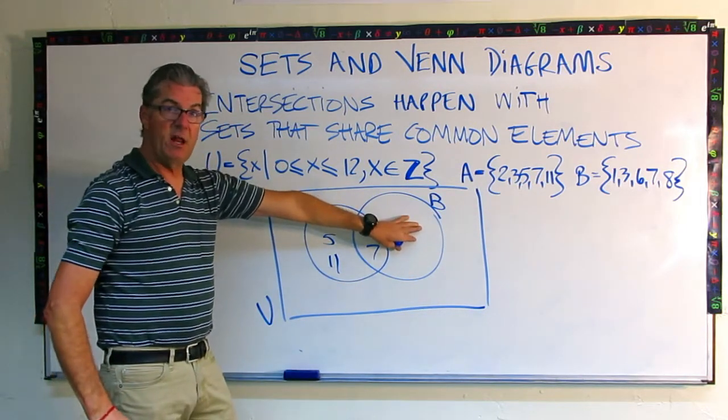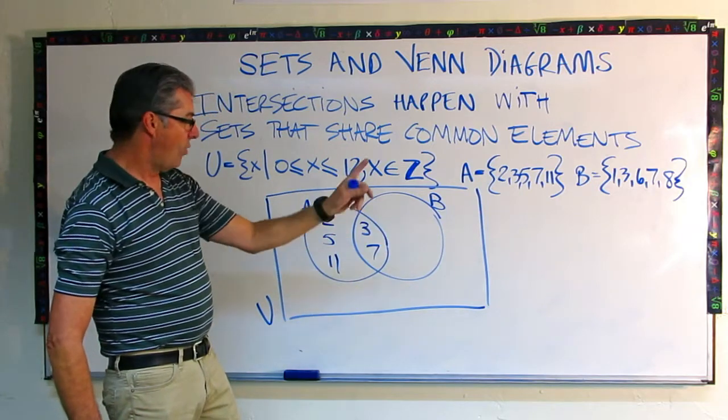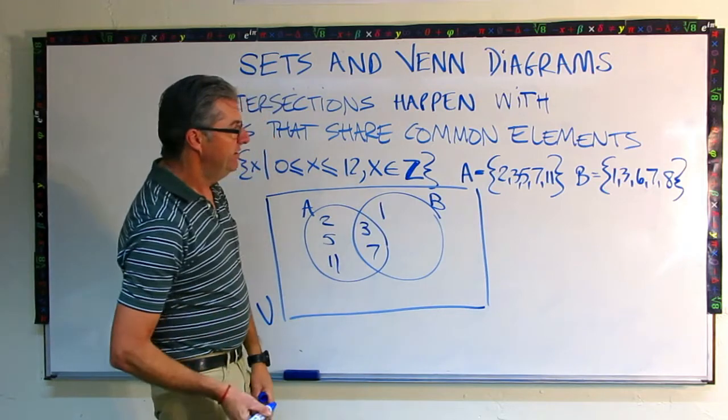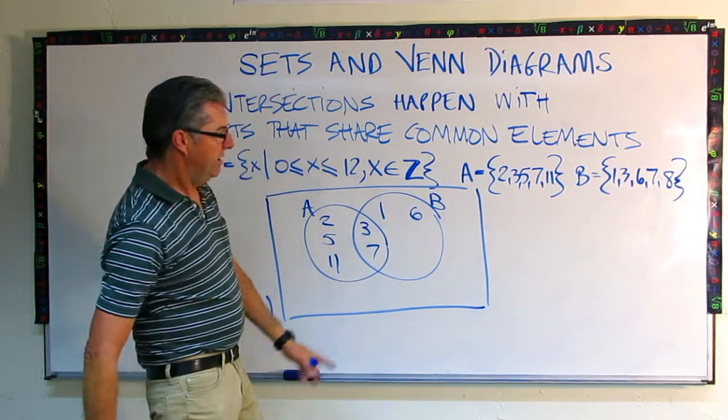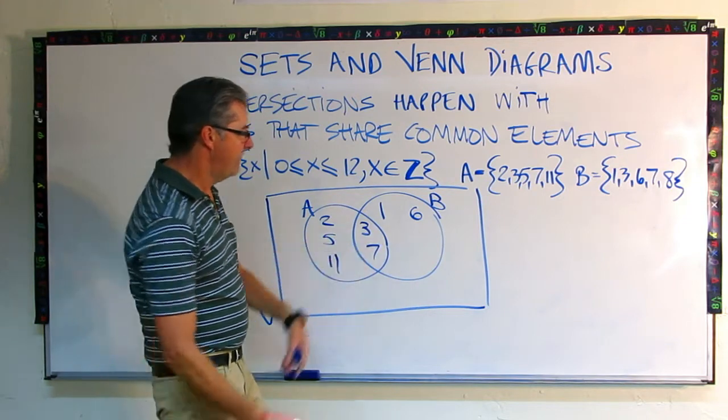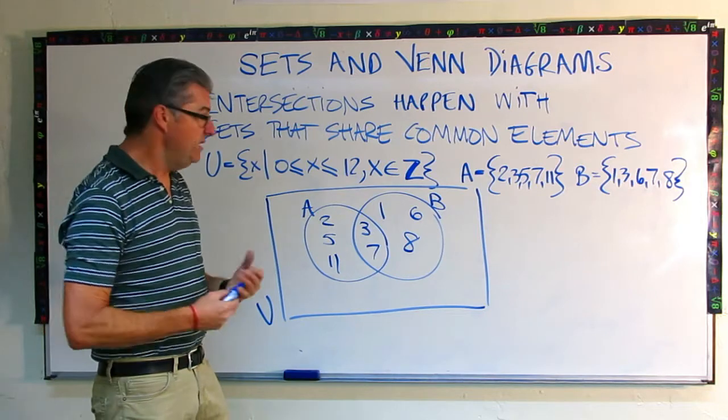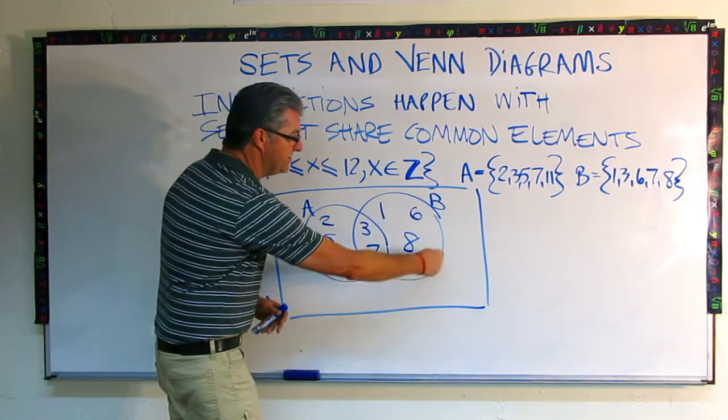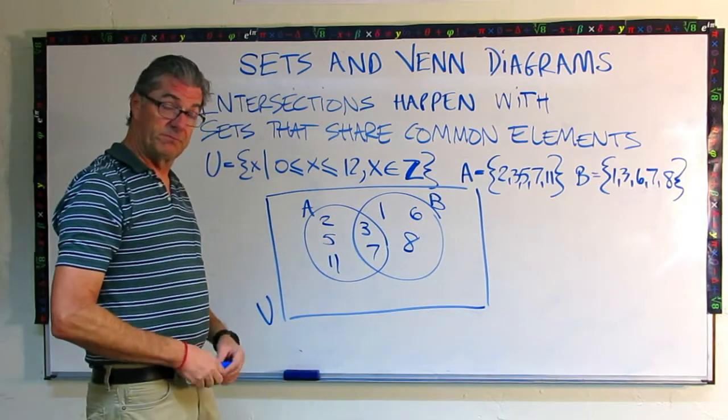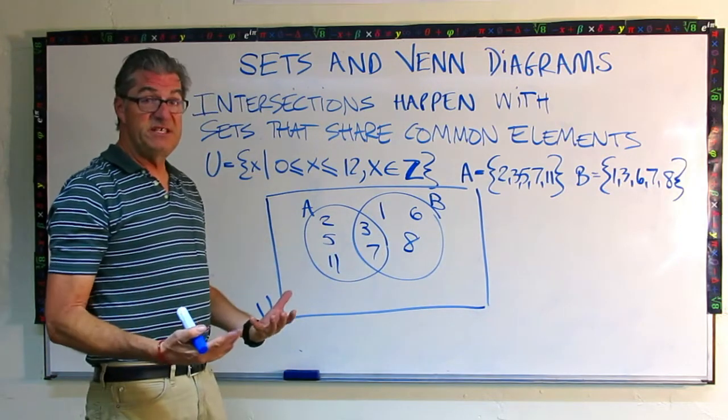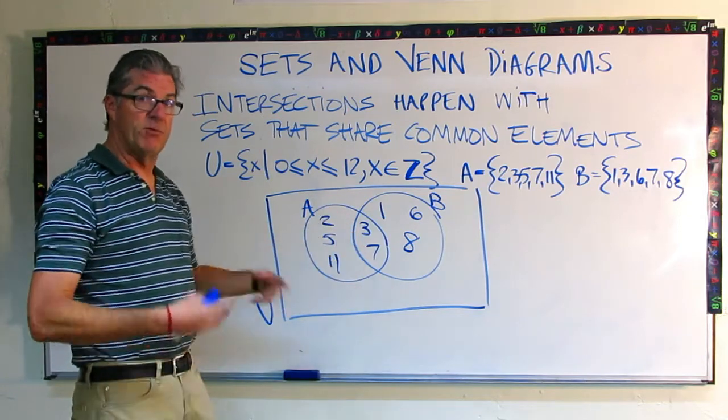Let's get B's remaining elements into the circle that's not part of the intersection. So I have a one, that's not represented yet. Then the three, that's there. I have a six, the seven is inside and I have an eight. So now I have the five elements of B are fully contained in the B circle with the two elements that are also in A in the intersection zone. So this is the idea of an intersection and we show it graphically on a Venn diagram in a pretty clear way.